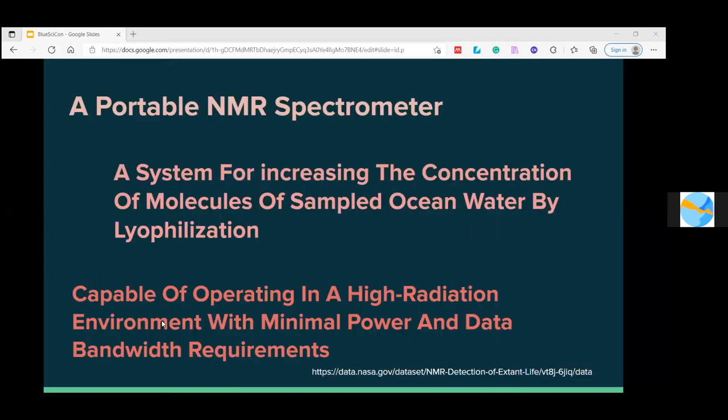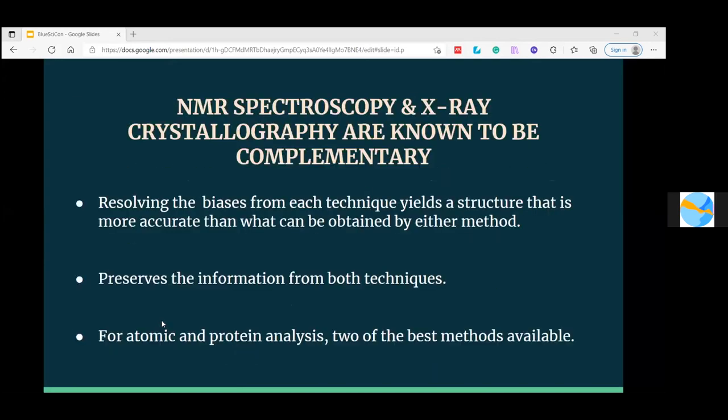The two techniques containing completely different information can be complementary to each other. X-ray crystallography when combined with NMR spectroscopy can resolve each other's biases and give information more accurate than obtained by either. In this slide I have noted the points, and this is how these two techniques are complementary to each other and provide us the most accurate information that can be obtained by either.